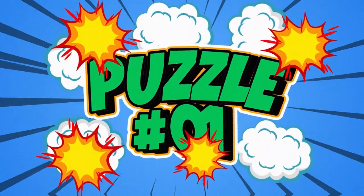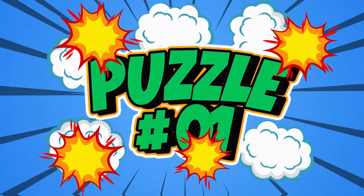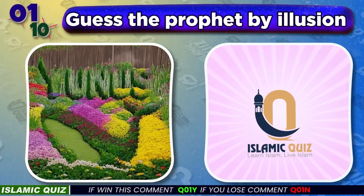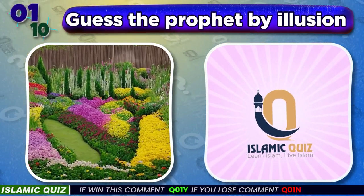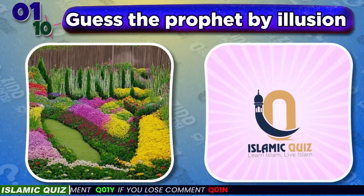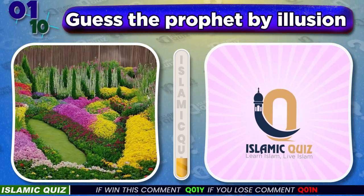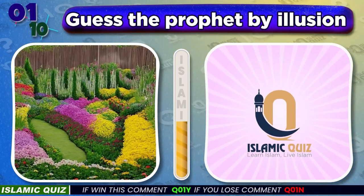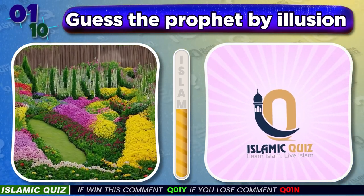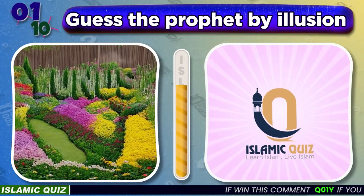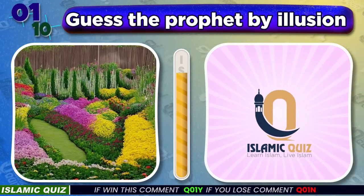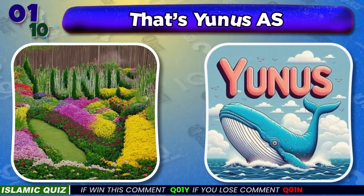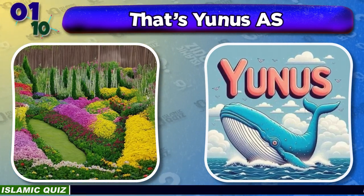Quiz No. 1: Do you recognize the prophet's name in this illusion? Yunus alayhi salam is the correct answer.